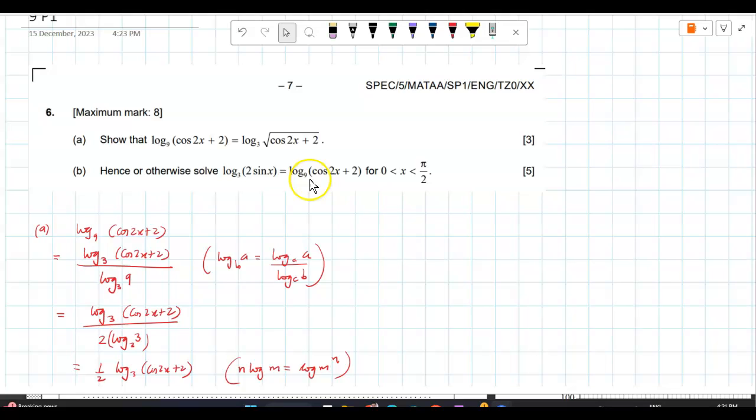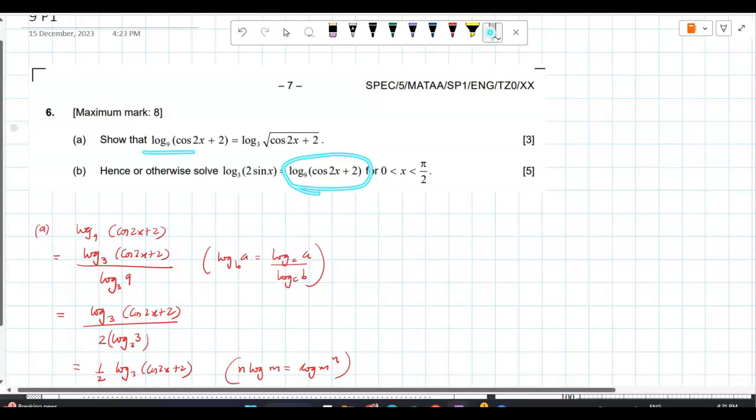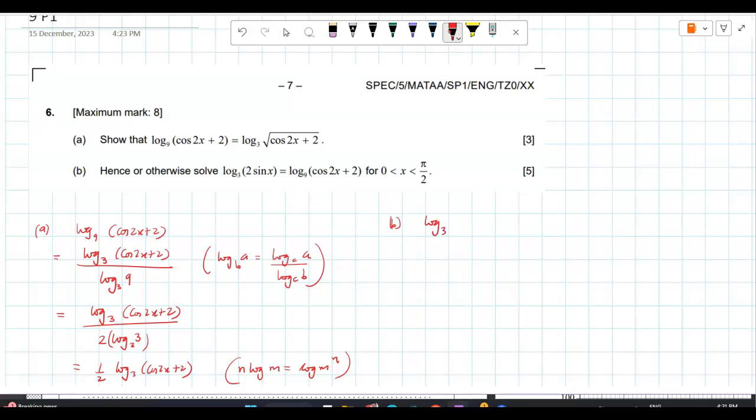Now, log cos 2x plus 2 to the base 9 is equal to... So, see, here you can see that this part, we have already proved this part is equal to this. Yeah. So, what I do is I will replace this by this. Yeah. So, therefore, they ask you that part. That's a hint, basically. Because you have to get the same base, na?